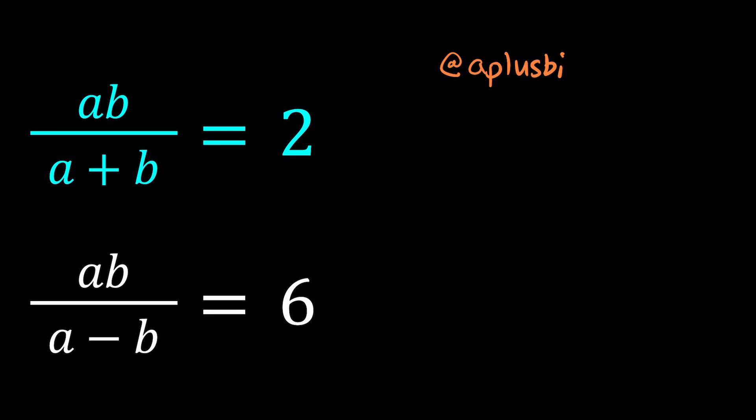First of all, when you see a problem like this, what is your first thought? I want you to write down what you would do, because depending on how many problems you've dealt with, everybody has a different background and way of solving problems. But the more you see these kinds of problems, the better you're going to get. I noticed that both of these equations have ab in them. So can I use that to my advantage, such as maybe isolate ab and set them equal to each other, or divide these equations side by side? Let's try that.